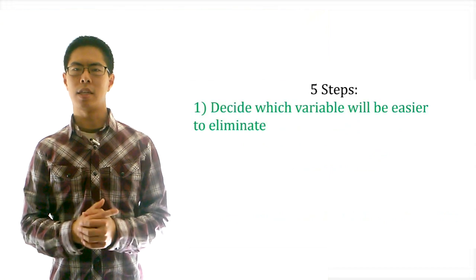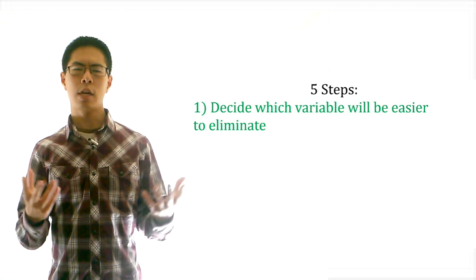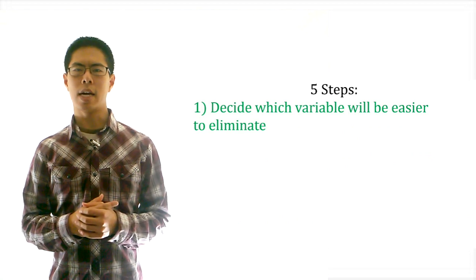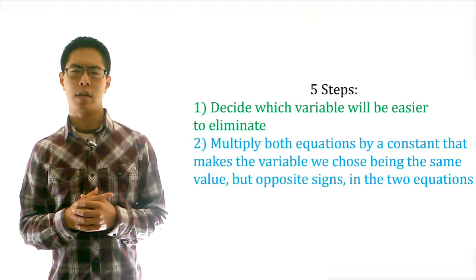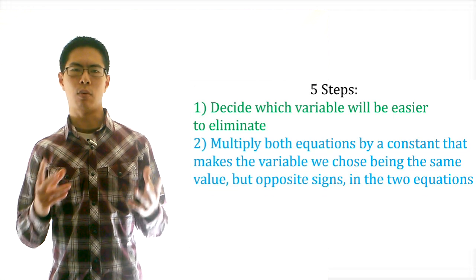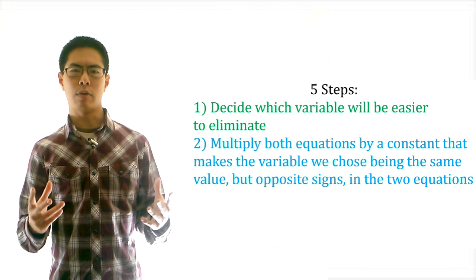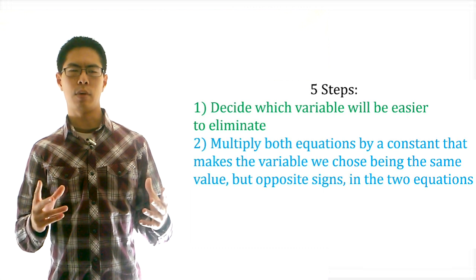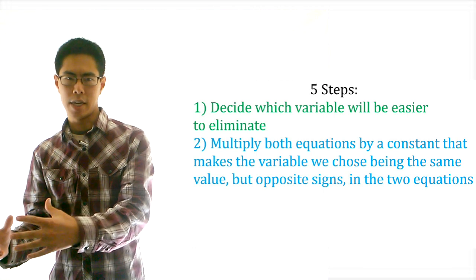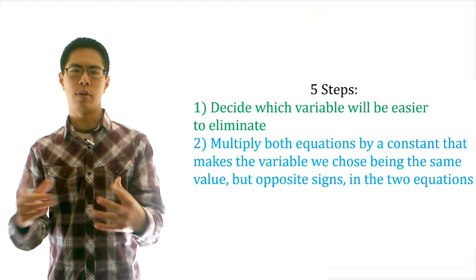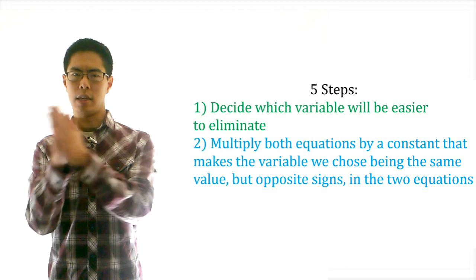The first step is to decide which variable will be easier to eliminate. Try to pick the variable with constants that have the simplest least common factor. The second step is to multiply one or both of these equations by a constant that results in the variable we chose being the same value but opposite signs in the two equations — for example, 2 and negative 2.